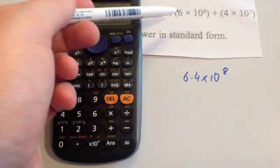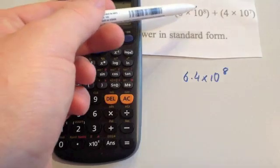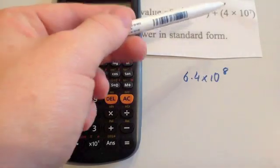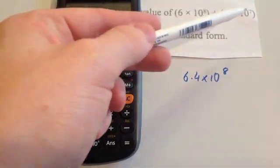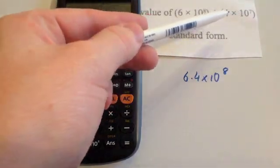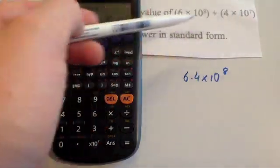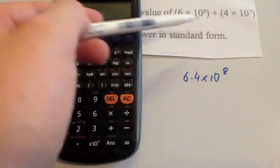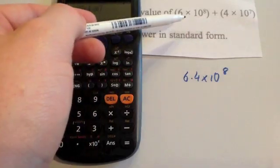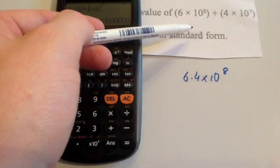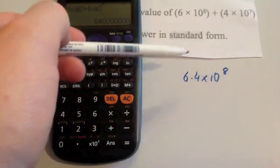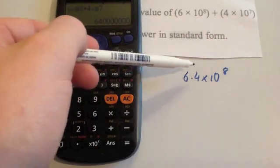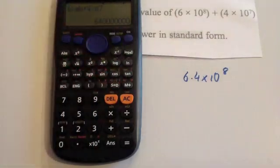Notice that 6 times 10 to the 8 and 4 times 10 to the 7 — if you were to write these out in full, you'd have a 6 and then going across one place would be the 4. That's why the answer is 6.4 times 10 to the power of 8.